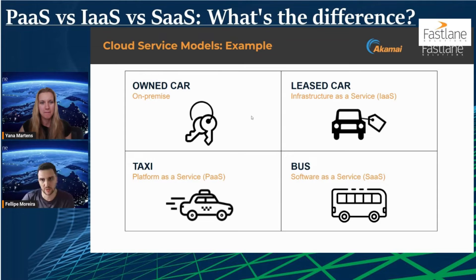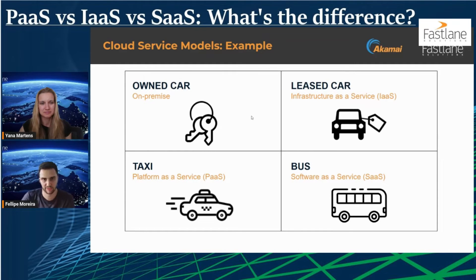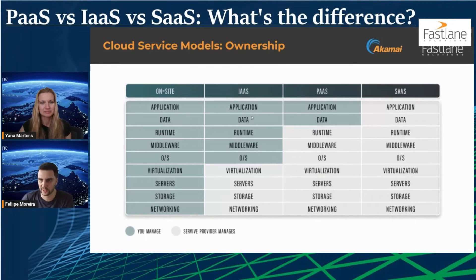What Jana was describing shows the benefits of owning versus having flexibility. On the next slide, we can see examples of on-premise, Infrastructure as a Service, Platform as a Service, and Software as a Service. The ownership spectrum goes from owning everything on-premise to not owning very much at all.